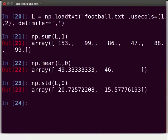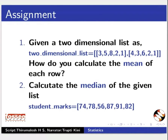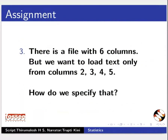This brings us to the end of the tutorial. In this tutorial, we have learned to do standard statistical operations like sum, mean, median and standard deviation in Python. Here are some self-assessment questions for you to solve. Given a two-dimensional list, how do you calculate the mean of each row? Second, calculate the median of the given list. Third, there is a file with six columns but we want to load text only from columns 2, 3, 4, 5 — how do we specify that?